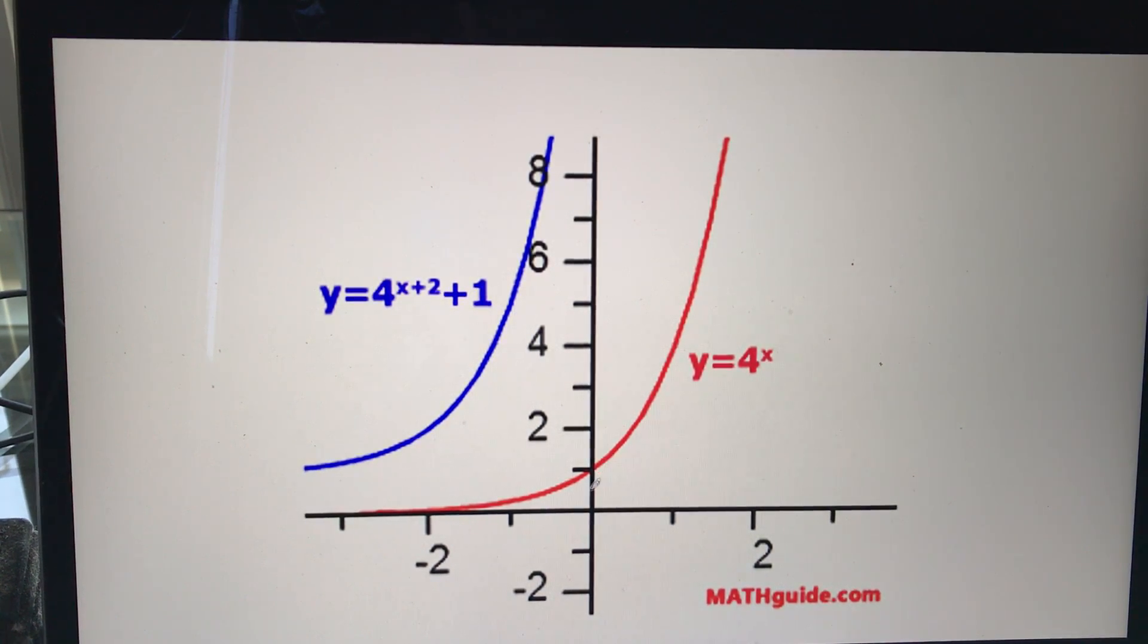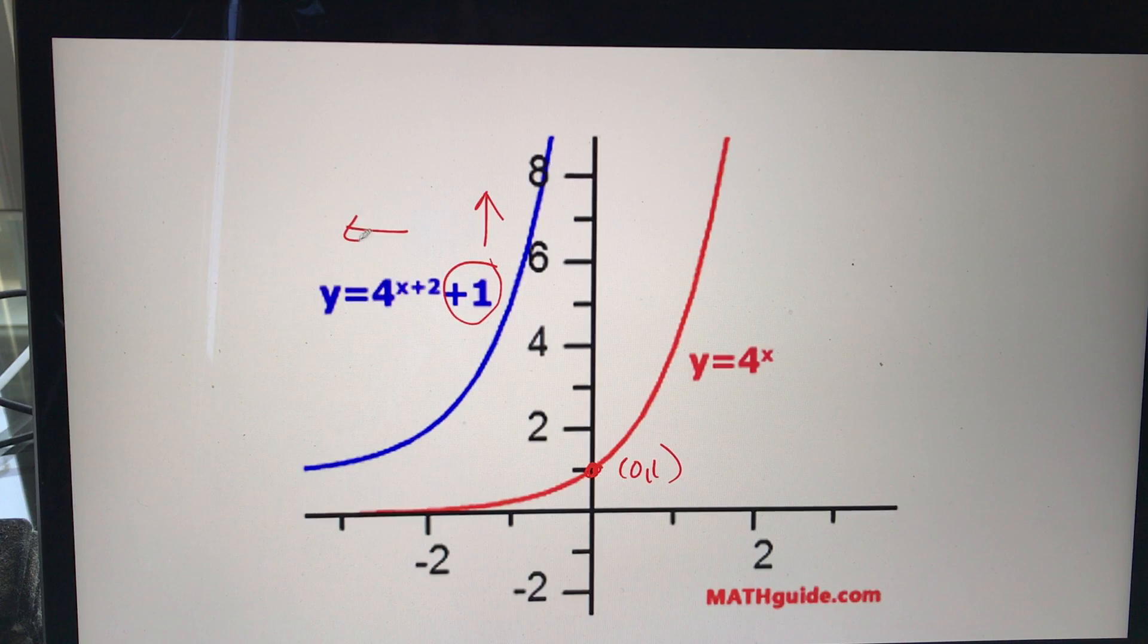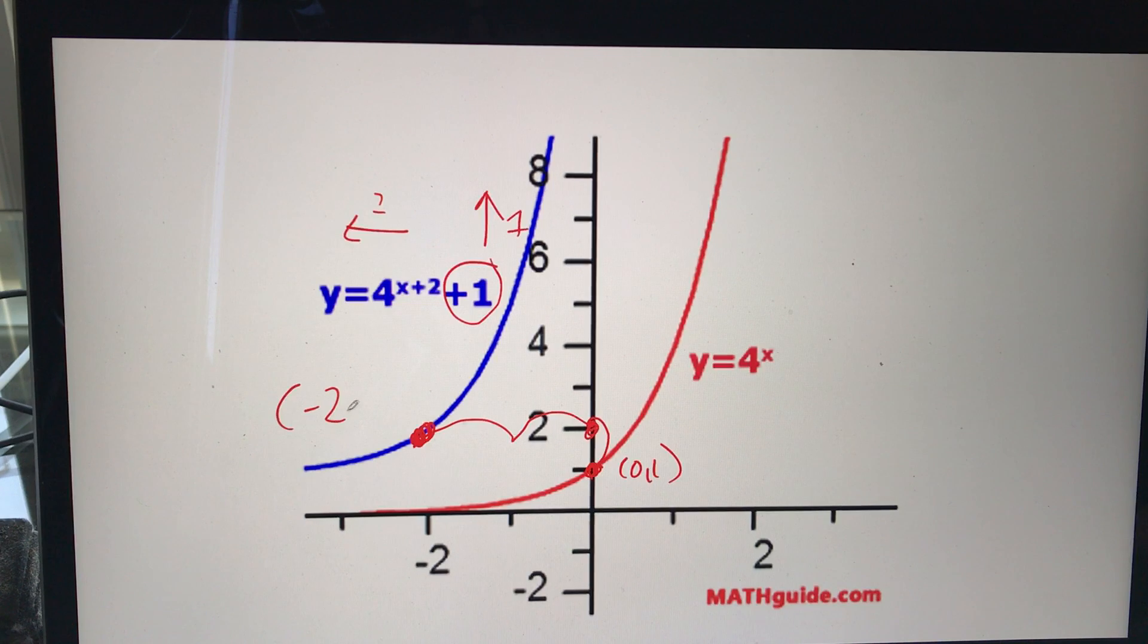And this is just a couple transformations putting together. Here's my (0, 1). It has to go up 1. And then, because it's positive 2, it has to go left 2. So it has to go up 1 and left 2. So this point has to go up 1, which is there. Left 2, 1, 2, which is there. So that's the point. So I can label that point, the actual coordinate, (negative 2, 2). And then again, once you have the point there, you just sort of wing the shape itself.